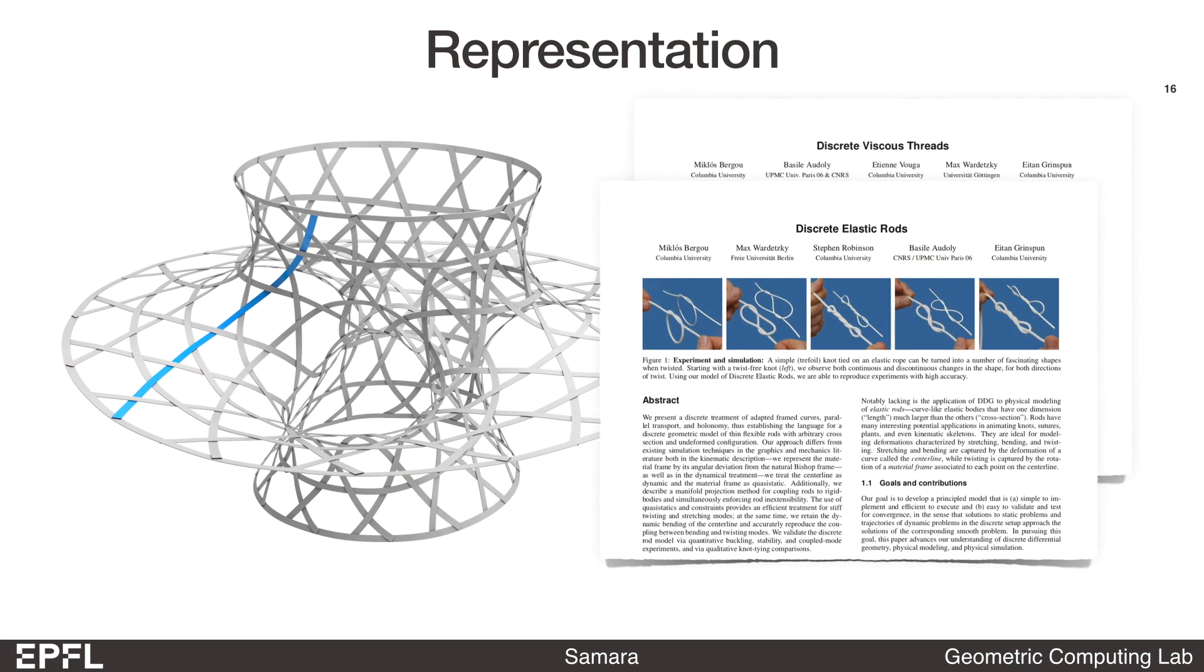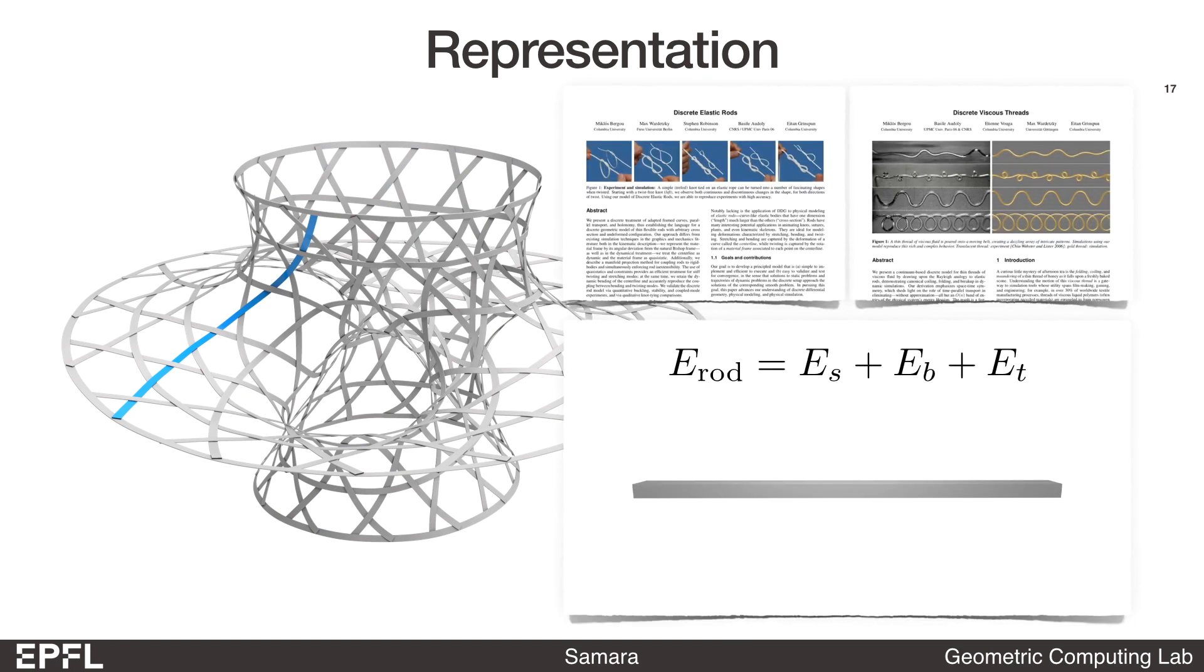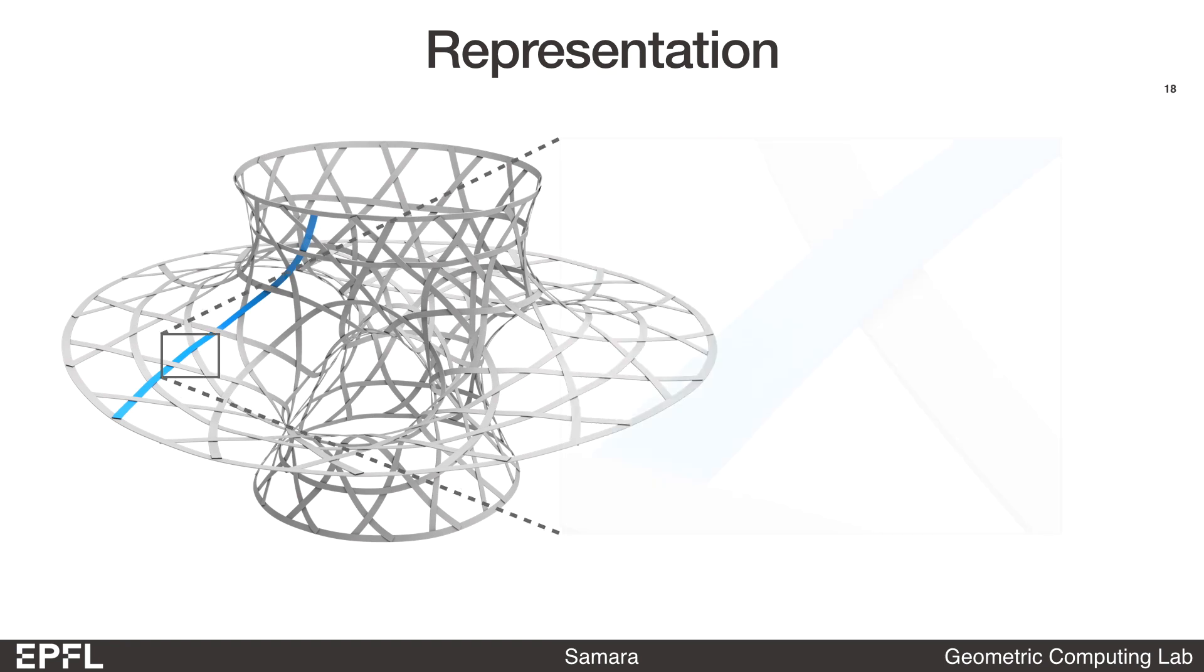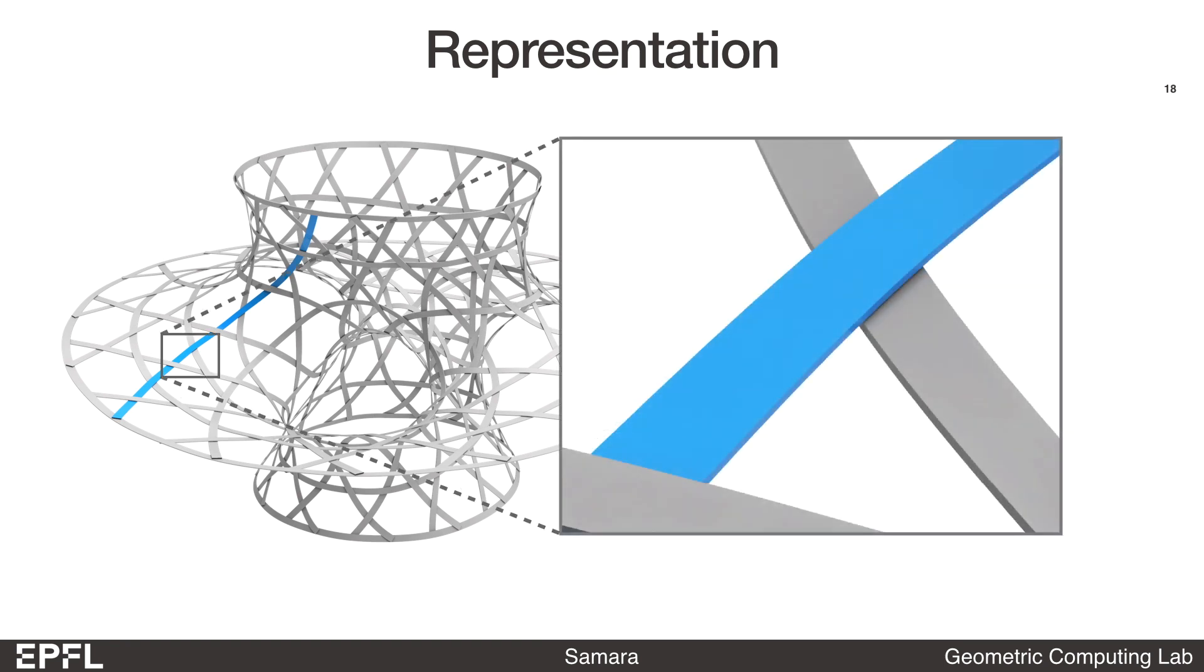To simulate the physical behaviors of the ribbons, we use the popular discrete elastic rods model. Representing the ribbon as a framed polygonal curve, the model allows us to efficiently compute the stretching, bending, and twisting energy of the ribbon. The simulation variables for each ribbon segment include the positions of the centerline vertices and the material frame angle for each centerline edge. They are used to compute the twisting energy.